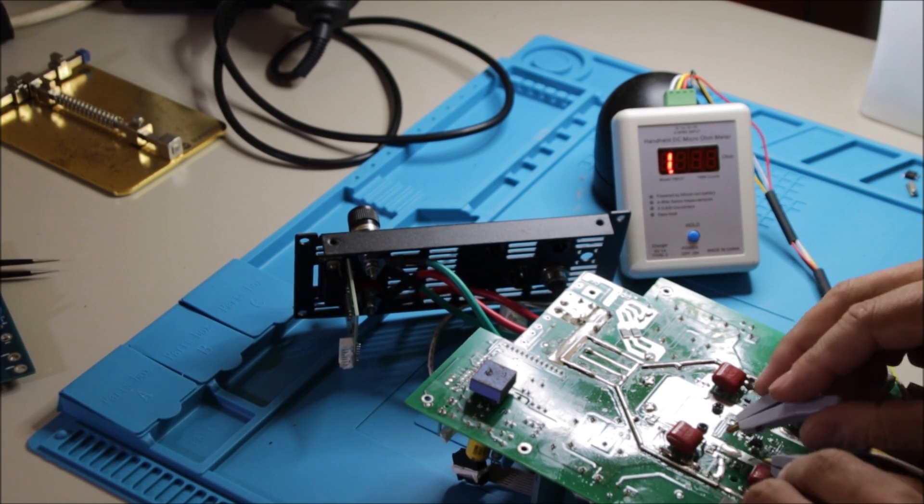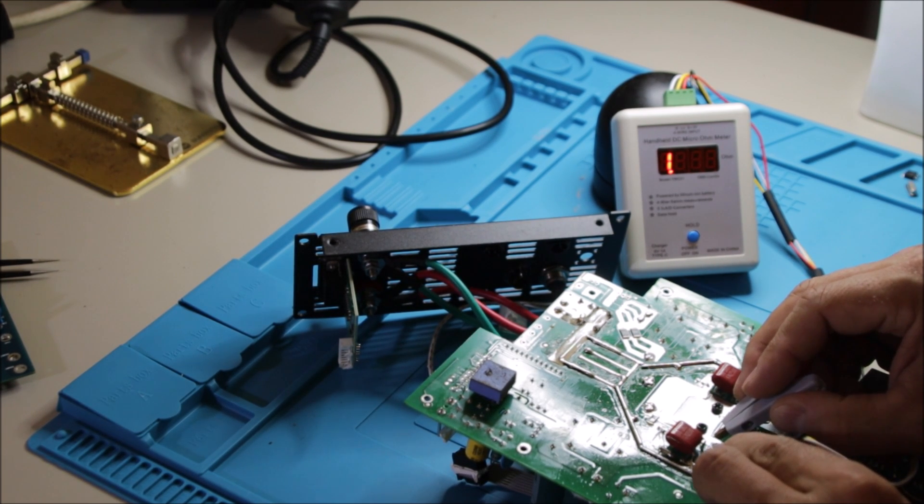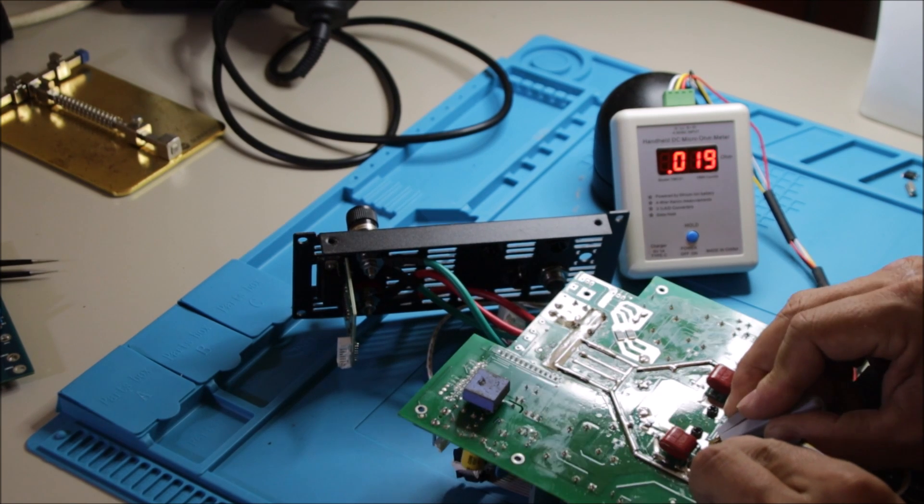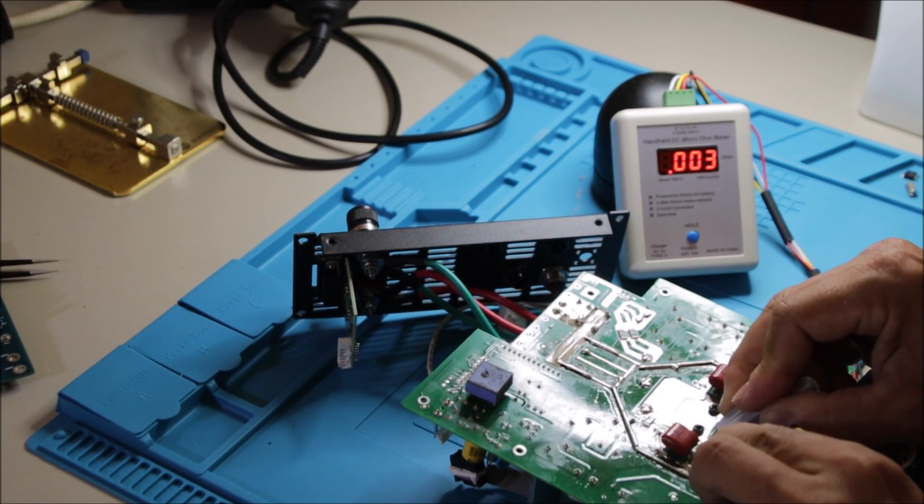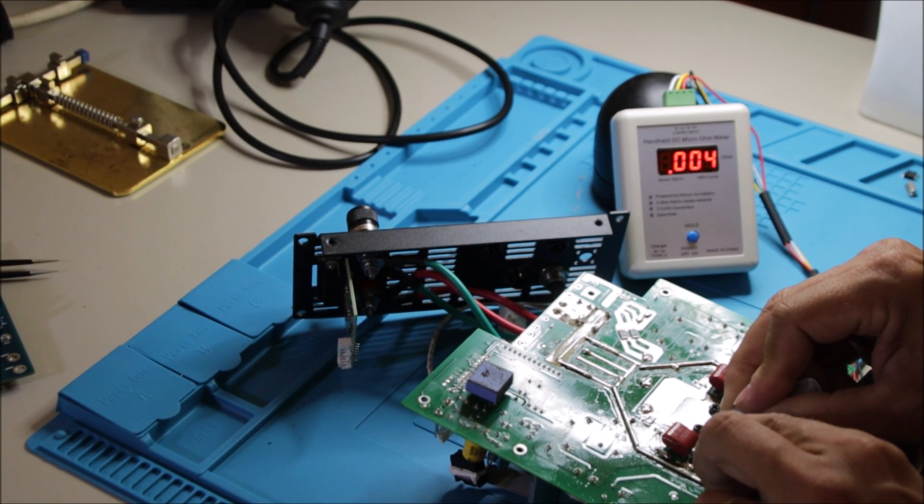On this one here we have one shunt resistor, also 4 milliohms, nothing in parallel there, so it should be 4 milliohms. Let's read this one, and you can see 4 milliohms, perfect.